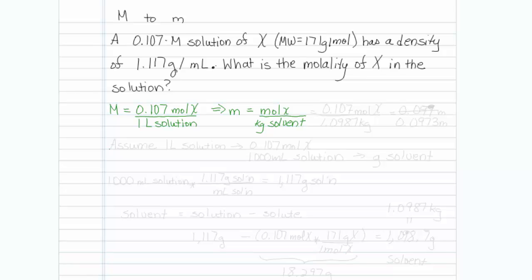We are going to assume 1 liter of solution. This automatically tells us we have 0.107 moles of X and 1,000 milliliters of solution.